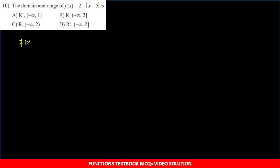10th question: domain and range of F(x) = 2 - |x - 5|. Domain: yahan na to root hai, na denominator mein koi function - x ki koi bhi value daal sakte hain, function ki value aayegi. So domain is all real numbers R.